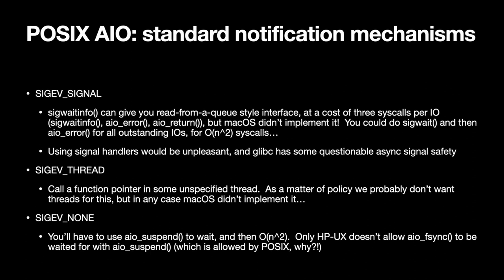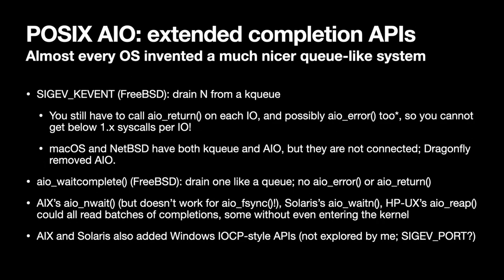One reason I don't really like aio_suspend is that you then have to make O(N²) system calls. If I've got 100 IOs running, I call aio_suspend giving it pointers to all 100 control blocks, it returns when one completes, and then I have to call aio_error on all of them — that's actually quadratic system calls, which is not nice. Almost all OSes invented something much nicer for consuming completions than that. I assume the POSIX process couldn't agree on something nicer, so POSIX finished up with nothing, which is a shame.